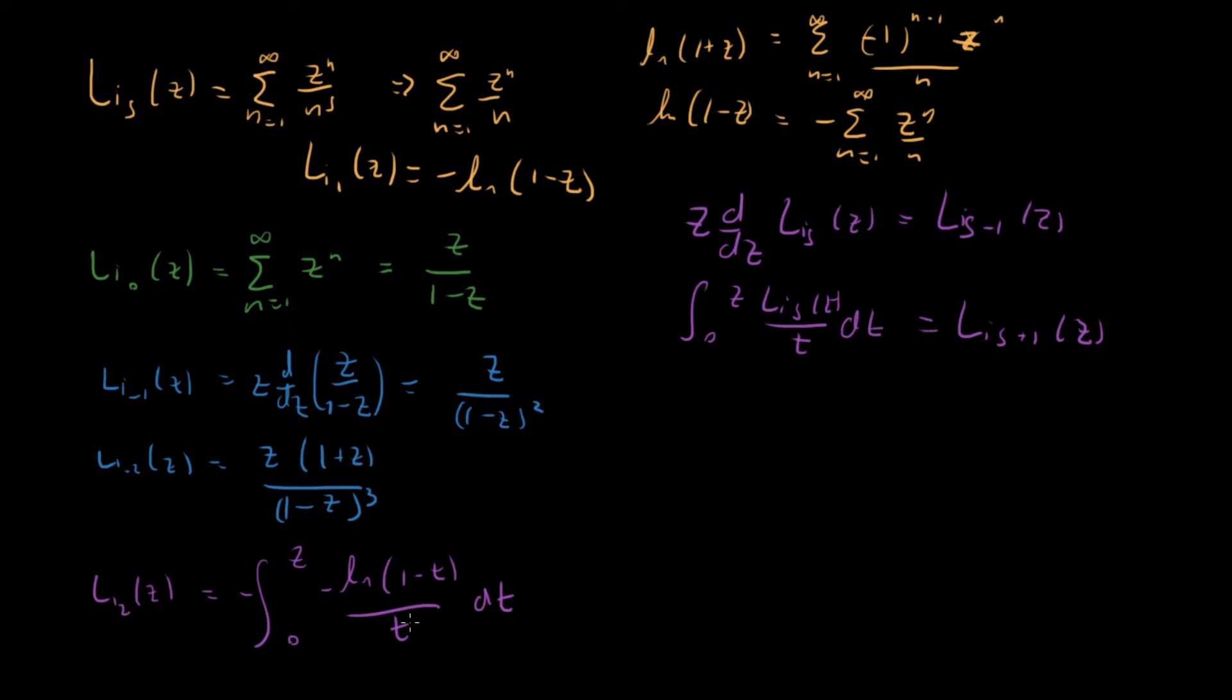And you can, in principle, keep doing this. So this is some special function we don't know how to solve. If you want to iterate up again, then you could get li sub 3, which is the trilogarithm. And you could keep iterating like that, and you would get a whole bunch of higher values. And then you would have this full spectrum of different polylogarithms at integer values of S.